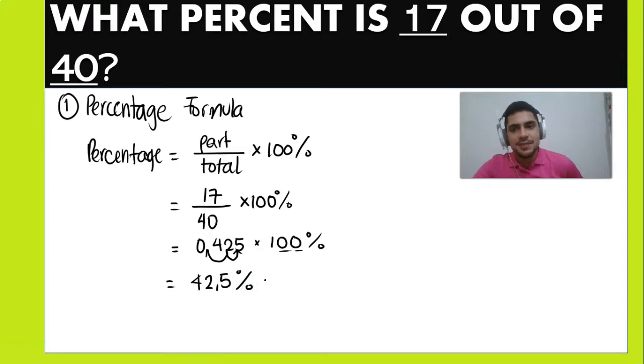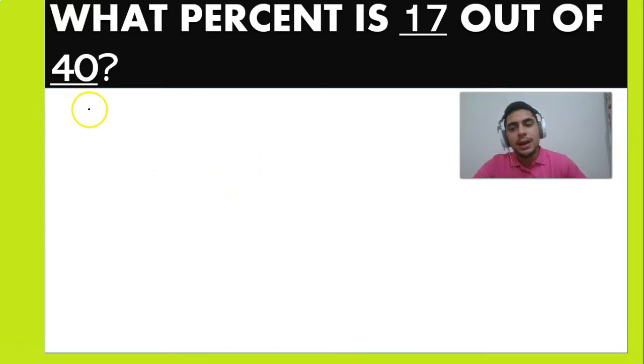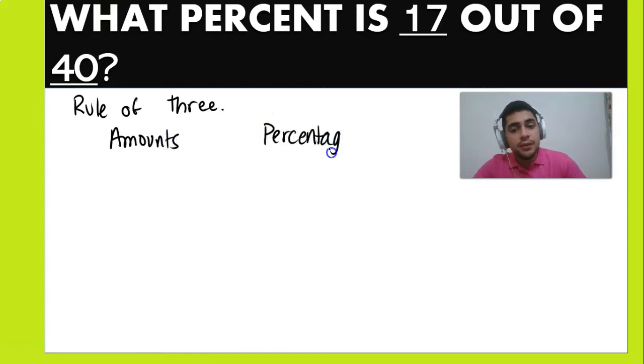So this is how you do it using the percentage formula. What about using the rule of three? In my opinion, the rule of three is the least effective way of solving this problem, but you can also use it. So you can think of the amounts, and you can think of the percentages. You have to remember that the whole is always going to be 100 percent.